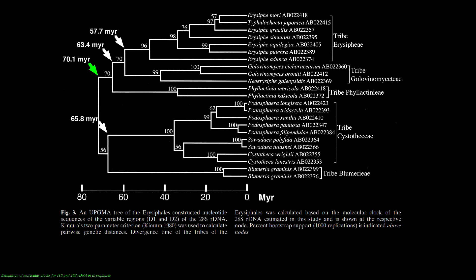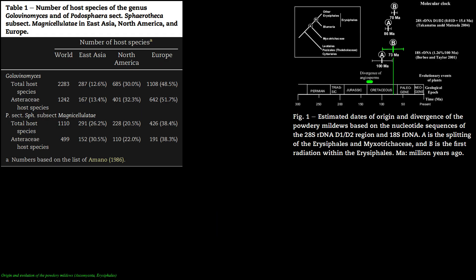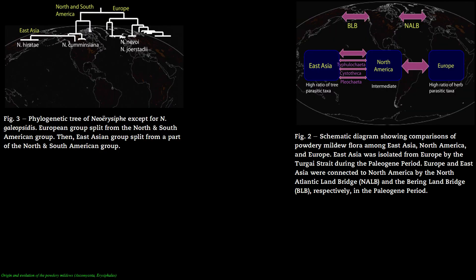These tribes radiated between the Maastrichtian age of the Cretaceous period and the Ypresian age of the Paleogene period 70 to 50 million years ago, around the same time that their primary hosts in the Asteraceae diversified. The two most basal genera of powdery mildews currently recognized are the Parauncinula and the Cespidotheca.